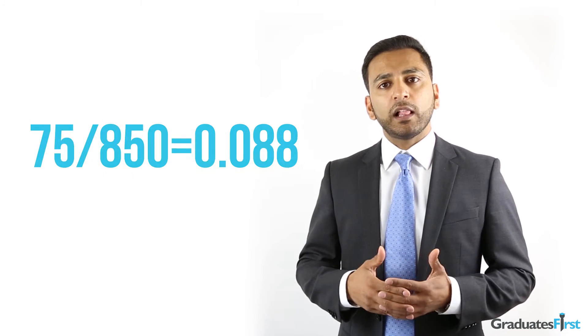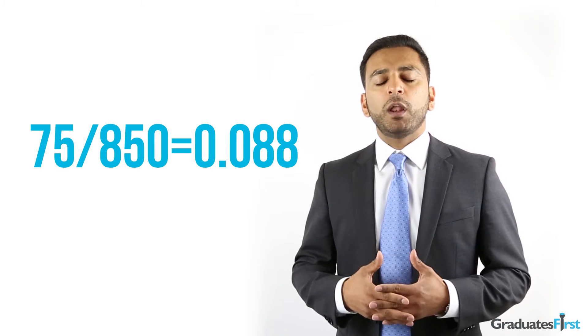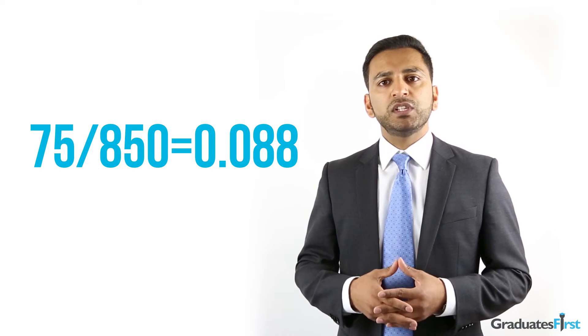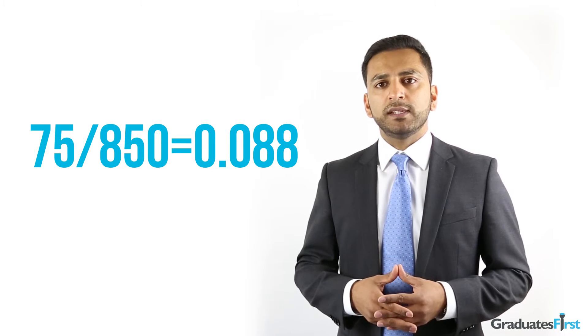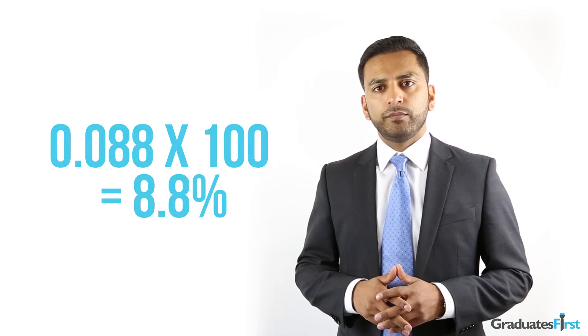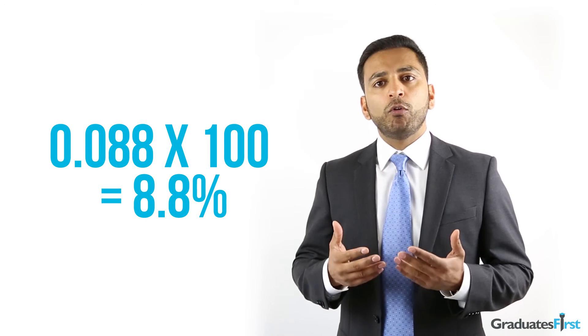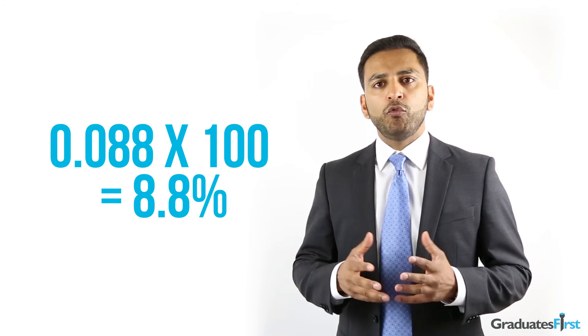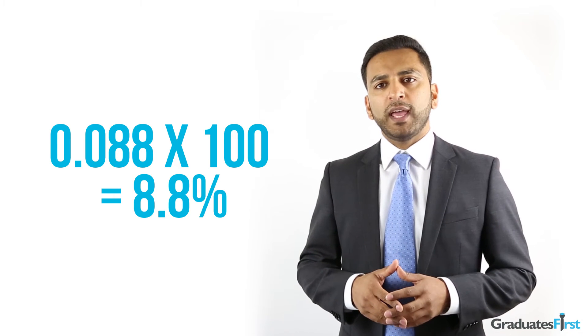Now to calculate the percentage increase we simply have to work out how much percentage of the year one value this increase of 75 represented. Therefore we calculate 75 divided by 850 which is equal to 0.088. Finally to convert this decimal value to a percentage we multiply by 100, that is 0.088 times 100 which equals 8.8 percent.